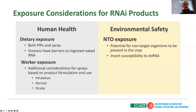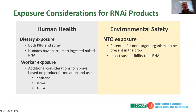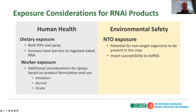Risk is hazard and exposure. For human health exposure, both sprayables and plant-incorporated pesticides could be present in the diet, either through transgenically expressed RNA or through RNA applied to foodstuff. It's worth noting that humans have a very strong digestive barrier that will quickly break down naked double-stranded RNA. This will have to be looked at differently if the formulation imparts significant stability. In terms of worker exposure with sprayable pesticides, additional considerations include not only ingestion through dietary sources, but also inhalation, dermal contact, and ocular exposure.